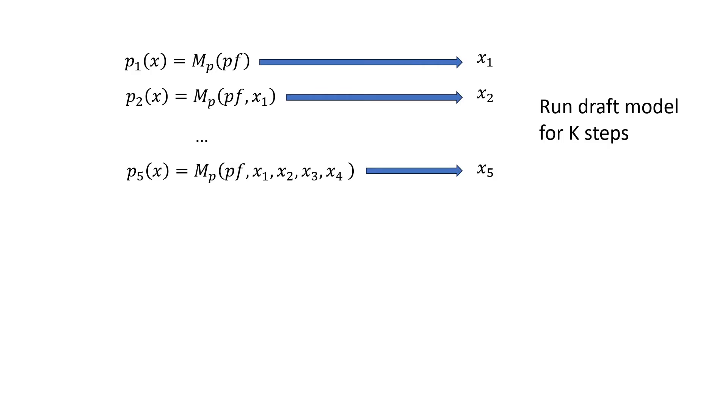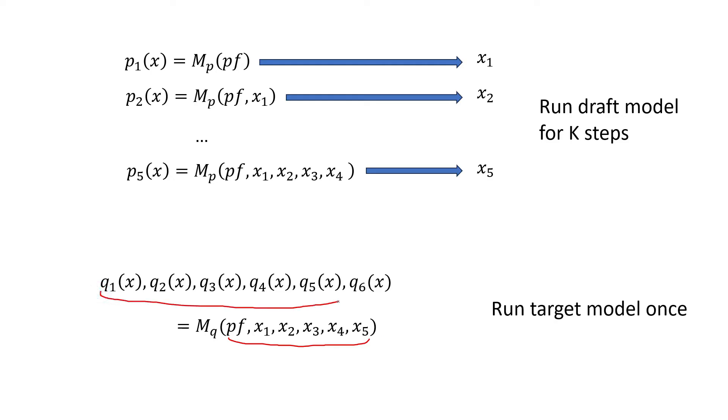Then the next thing we do is run the target model once in parallel. The target model is fed the prefix and all the tokens that we generated in the draft model, and it basically checks all of them in parallel. So it produces five probability distributions for each of the five tokens. And at the same time, it also generates a probability distribution for the sixth token in case we need it later. And all of this can be done in just one forward pass. And one thing to note is we're only generating the distributions for the target model. We are never sampling from these distributions. So all of the tokens are going to be sampled from the draft model, not the target model.